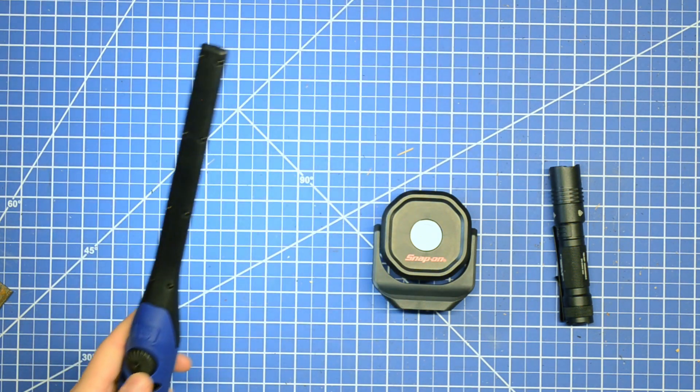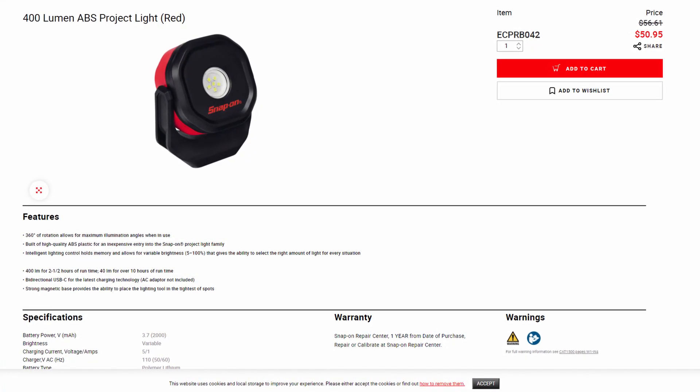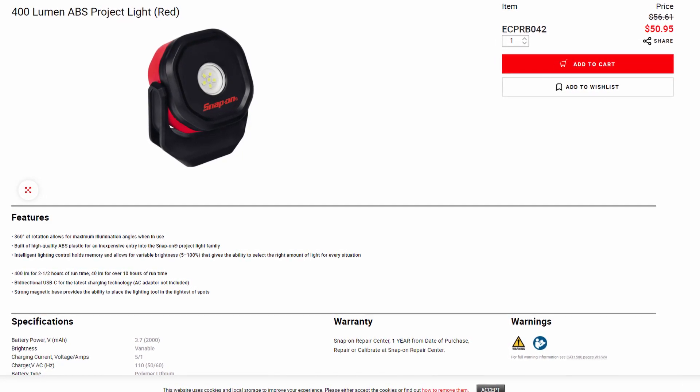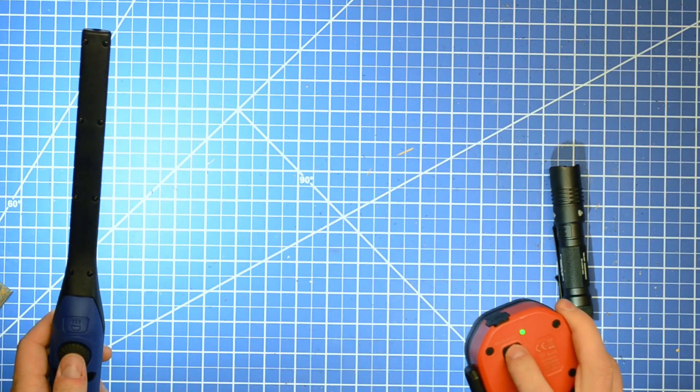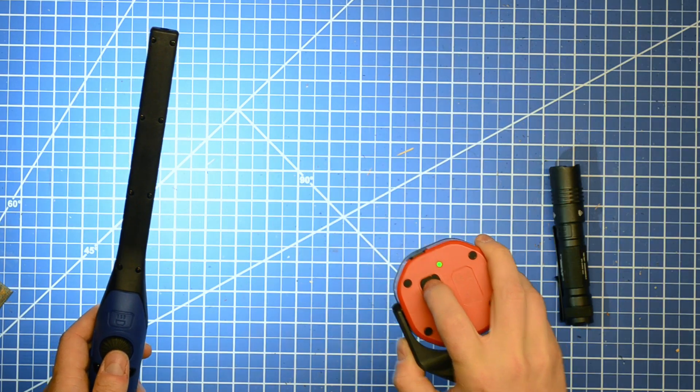First we have the Snap-on 400 lumen mini ABS floodlight or project light. We purchased this because it's popular and we wanted a mini floodlight in the range, but mainly because it's $51 and that's one of the cheaper ways to step off the Snap-on truck with something in your hands.